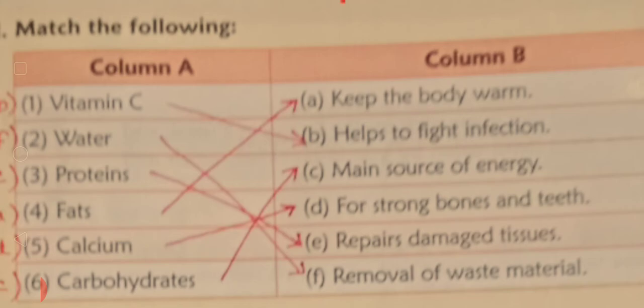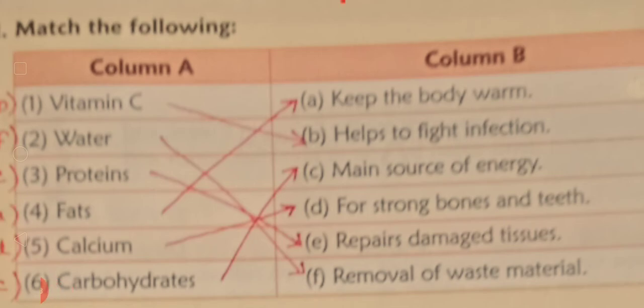Against letter d, fourth number: for strong bones and teeth — B-O-N-E-S and T-E-E-T-H.